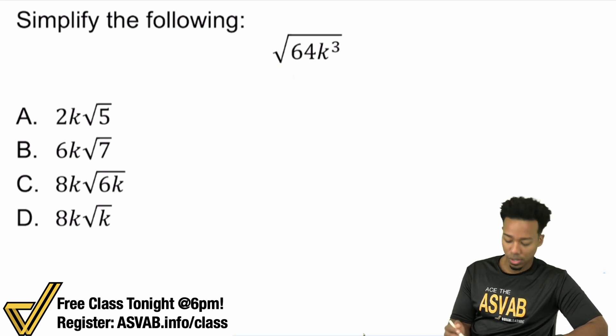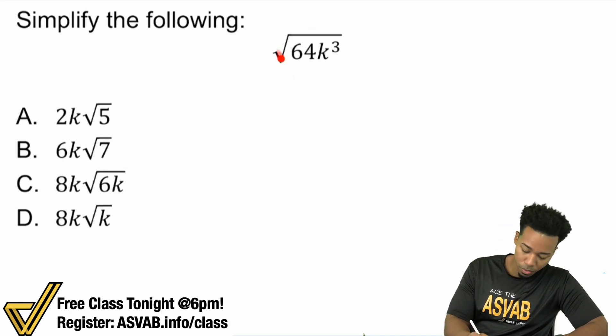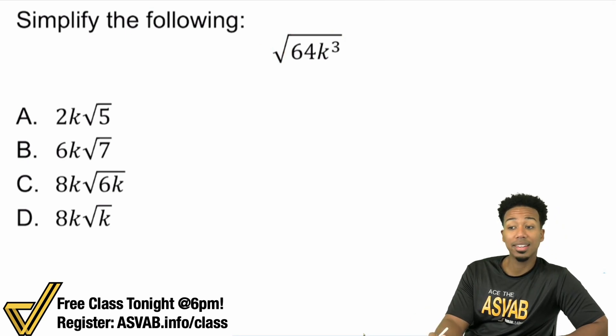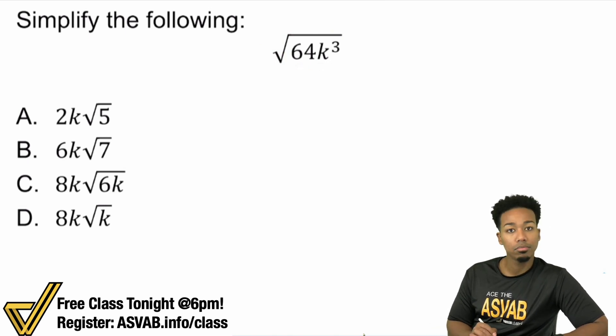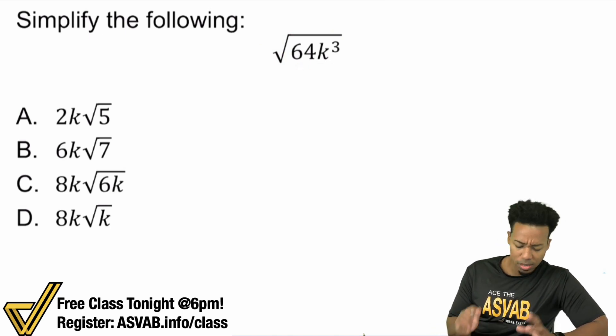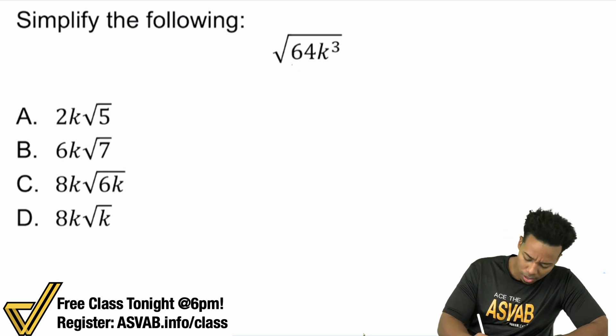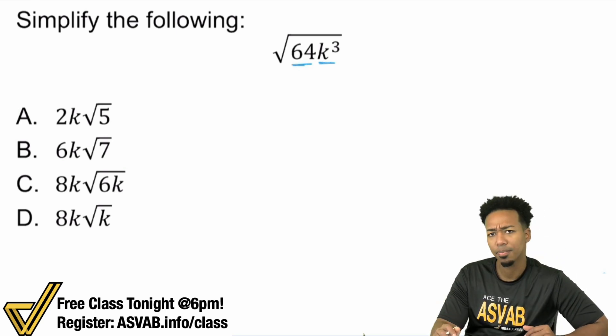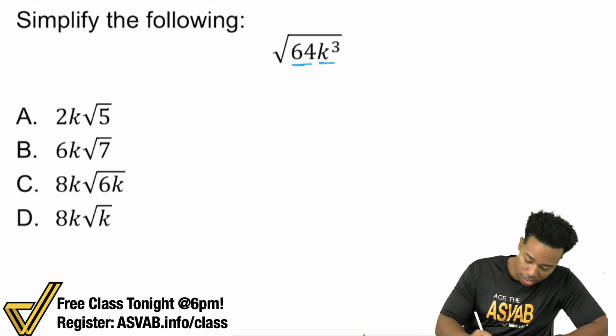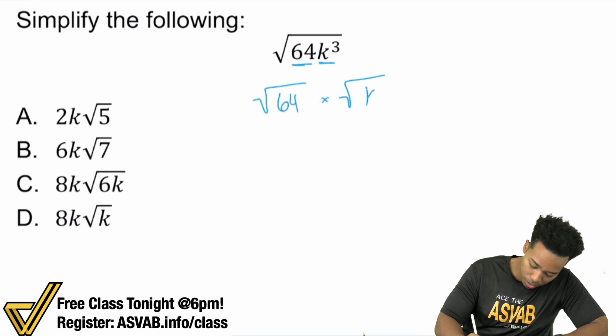When you have a square root, really what you're looking at is what number multiplied by itself gives me that number. So we can honestly split this up between the number and variable. We can really look at this as the square root of 64 times the square root of k³.